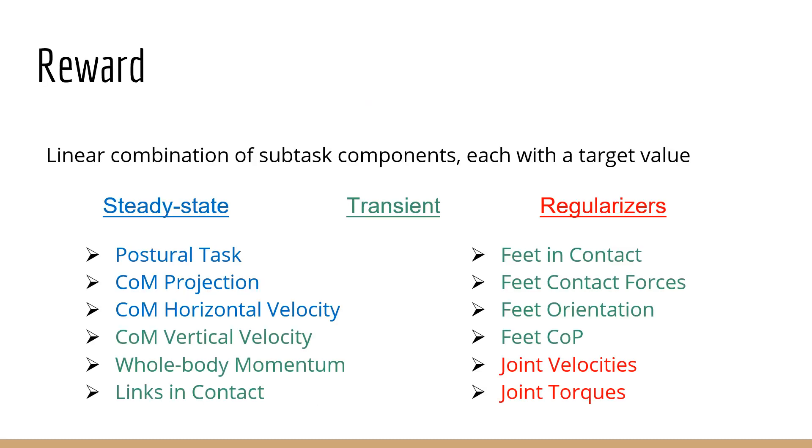The reward we employ is a weighted sum of terms that can be categorized as regularizers, steady-state, and transient terms. Steady-state terms are active when the robot is in double support, meaning that both feet are in contact with the ground. They include the postural task, biasing the agent towards a symmetric human-like robot configuration, center of mass projection, and center of mass horizontal velocity. The transient terms are active in single or without support, and include center of mass vertical velocity, whole body momentum, and links in contact, which is penalized if any link beside the feet is in contact with the ground.